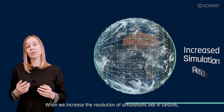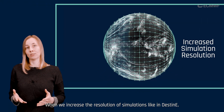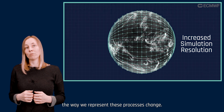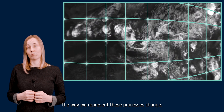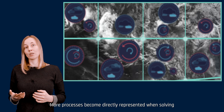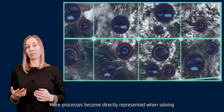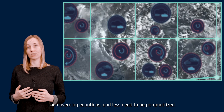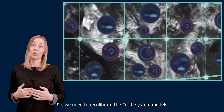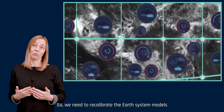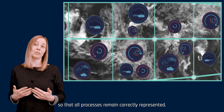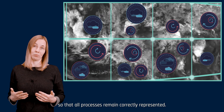When we increase the resolution of simulations, like in Destination Earth, the way we represent these processes changes. More processes become directly represented when solving the governing equations, and less need to be parametrized. So, we need to recalibrate the Earth's system models so that all processes remain correctly represented.